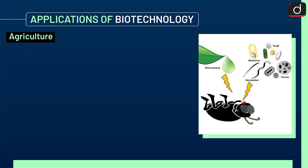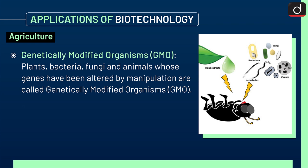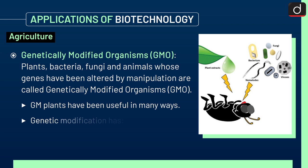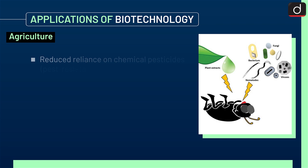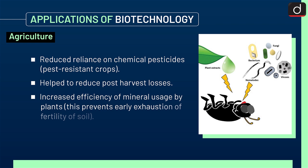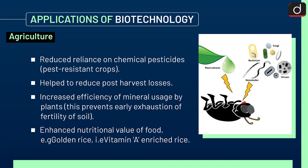Next is genetically modified organisms, i.e. GMO. Plants, bacteria, fungi, and animals whose genes have been altered by manipulation are called genetically modified organisms or GMOs. GMO plants have been useful in many ways. Genetic modification has made crops more tolerant to abiotic stresses such as cold, drought, salt, and heat. It has reduced reliance on chemical pesticides through pest-resistant crops, helped to reduce post-harvest losses, increased efficiency of mineral usage by plants preventing early exhaustion of soil fertility, and enhanced nutritional value of food — for example, golden rice, which is vitamin A enriched rice.